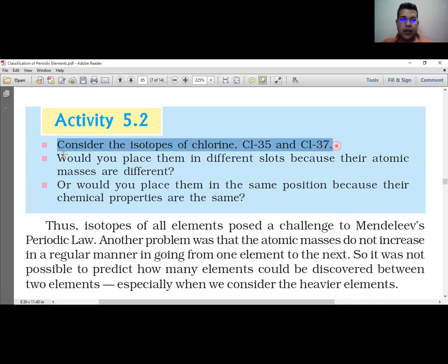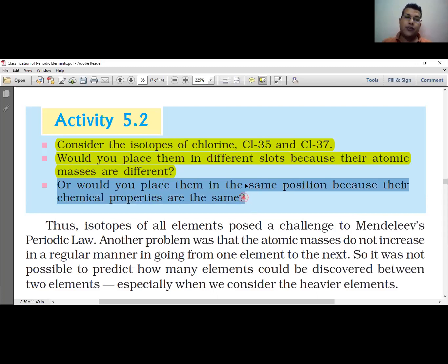Would you place them in different slots because their atomic masses are different, or would you place them in the same position because their chemical properties are the same? Isotopes were a problem because they looked at two things: chemical properties and atomic masses.